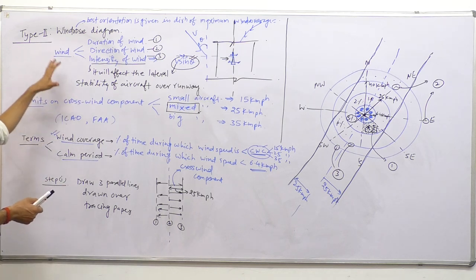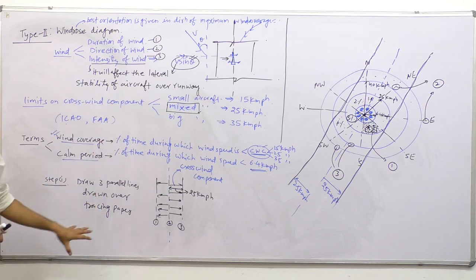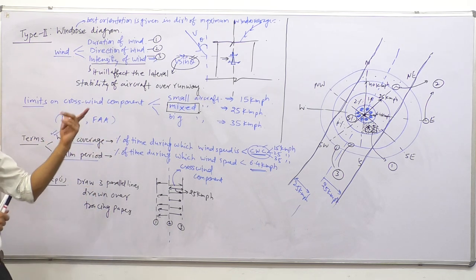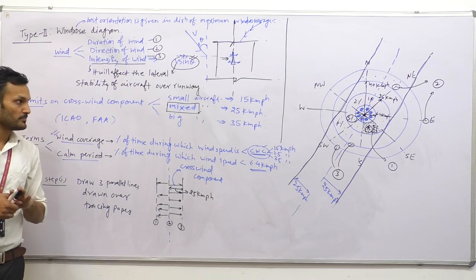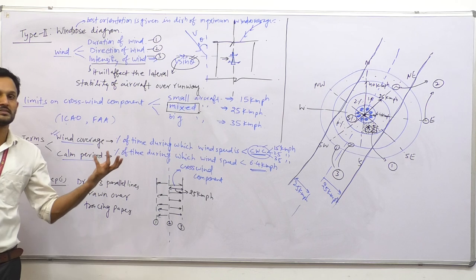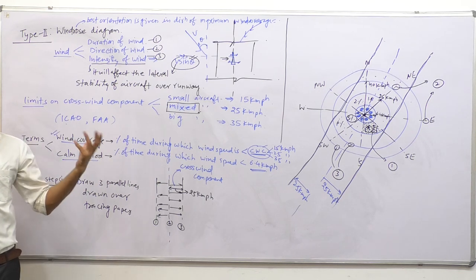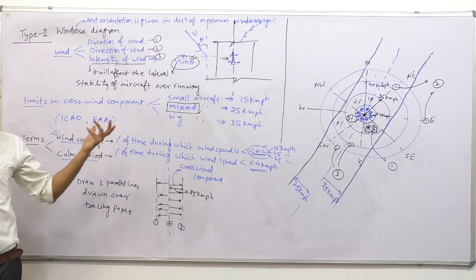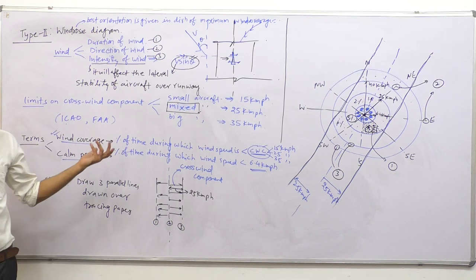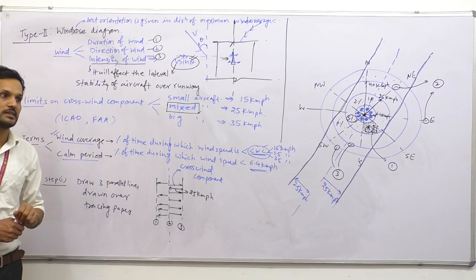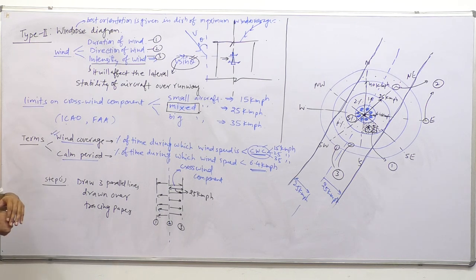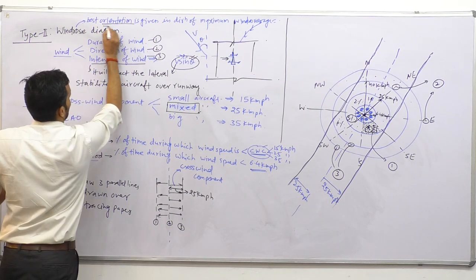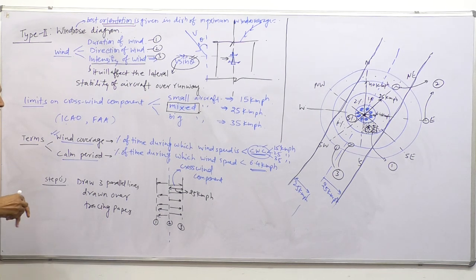How we can get the best orientation of the runway using this Type 2 diagram is clear through the graphical representation. The two key terms are wind coverage and calm period. This orientation of the runway is very important — if we don't utilize the site factors available to us beneficially, we will be paying extra effort and uneconomical designs. This is all about the second type of Wind Rose diagram, which revolves around the orientation of the runway.